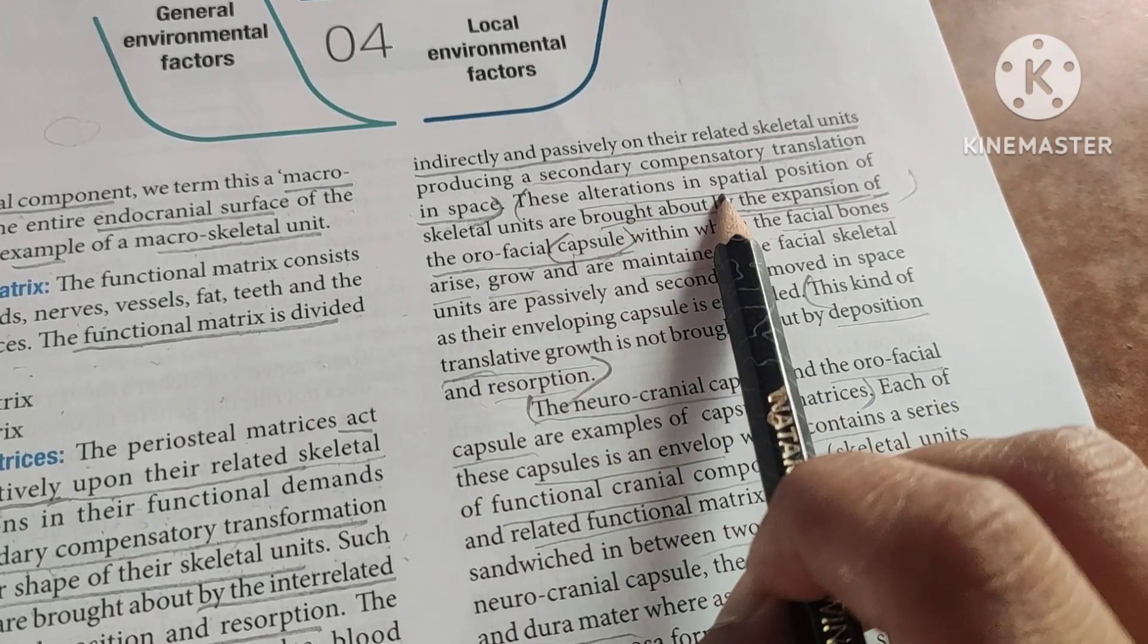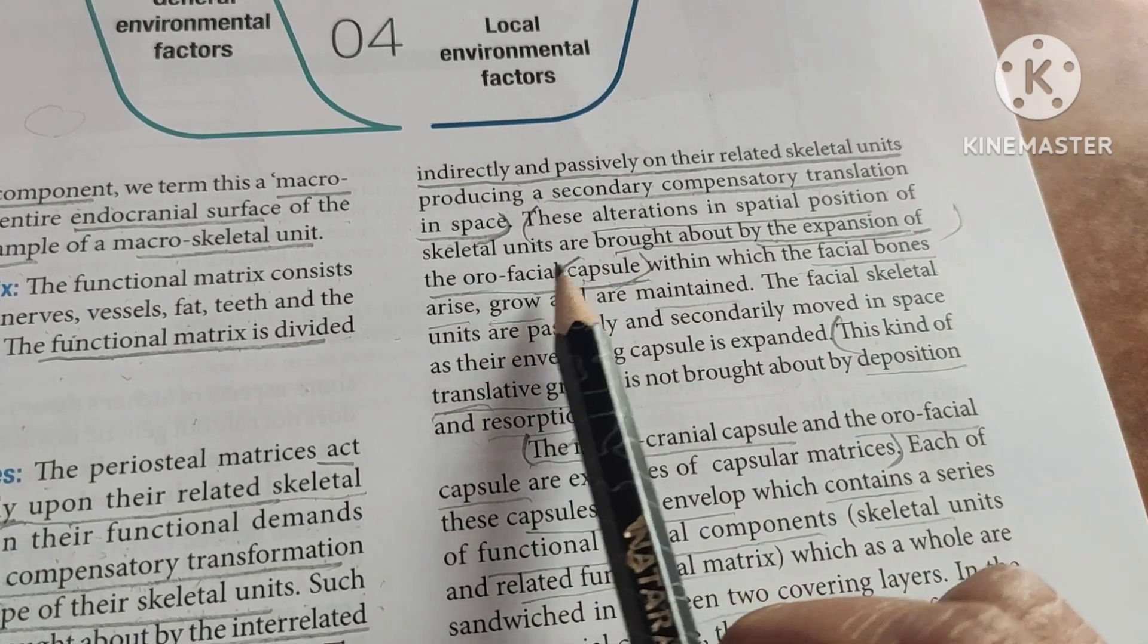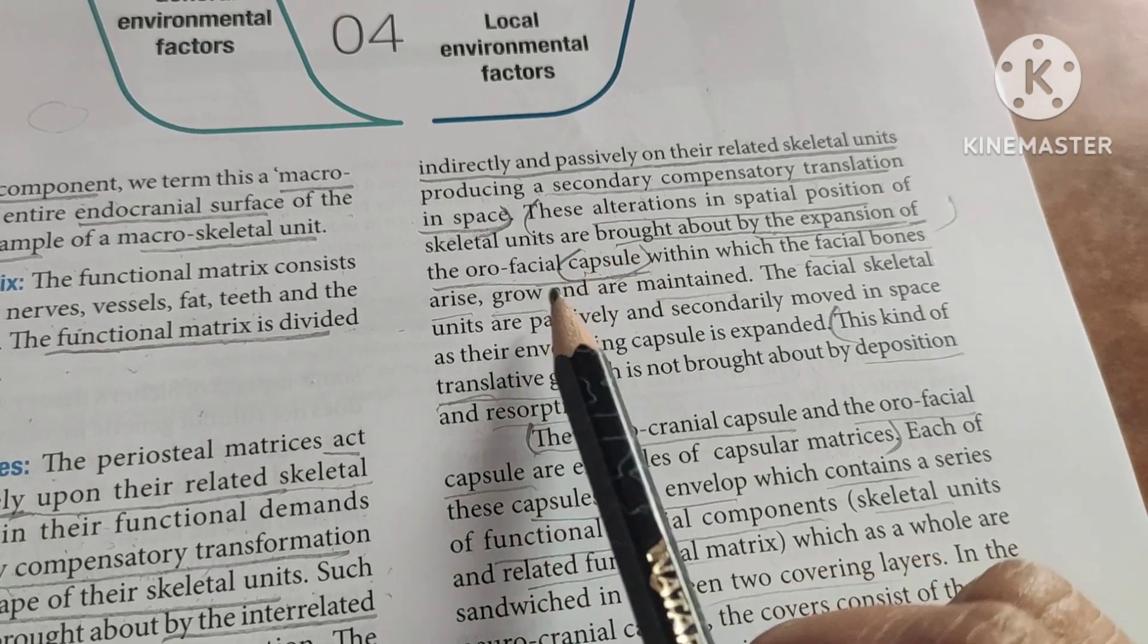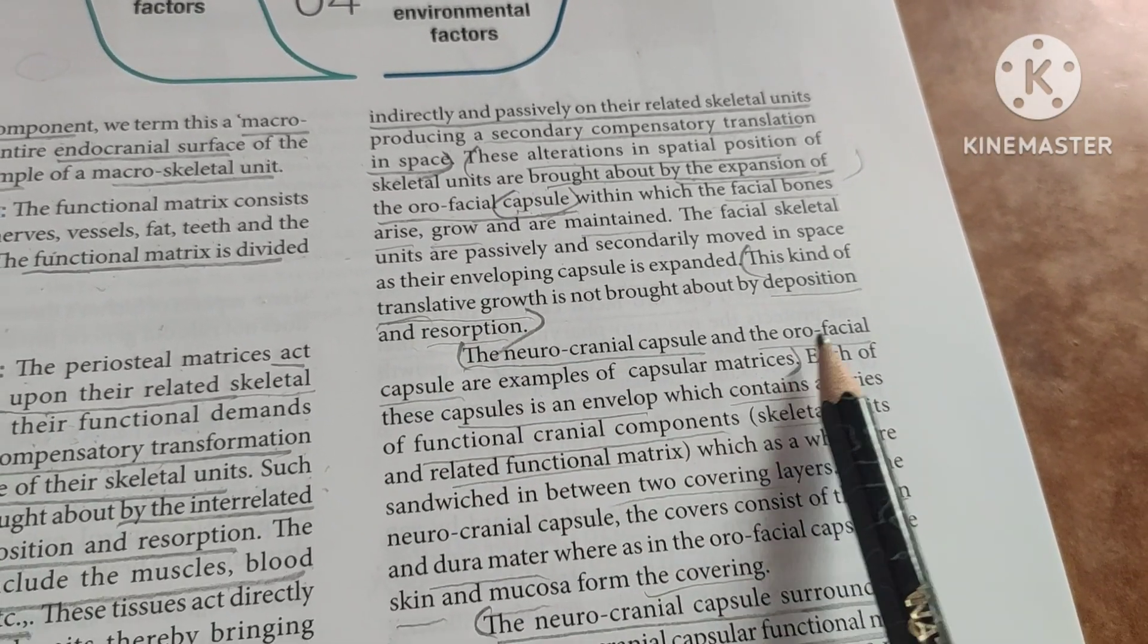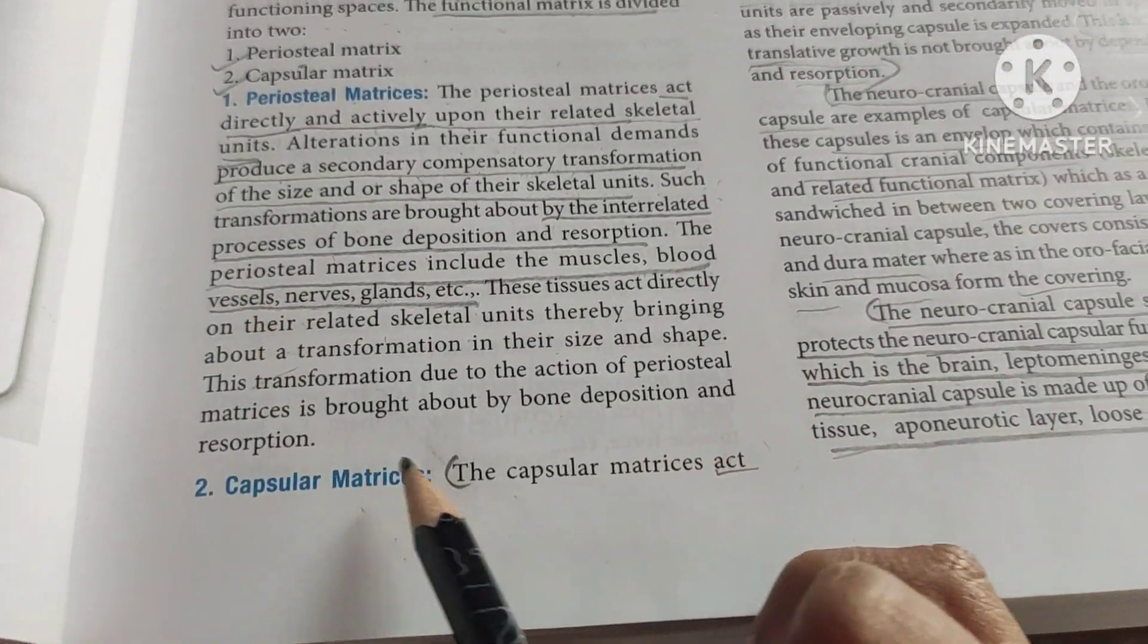These alterations in the spatial position of the skeletal unit are brought about by the expansion of the orofacial capsule. These capsules consist of the neurocranial capsule and the orofacial capsule, which are examples of the capsular matrix.